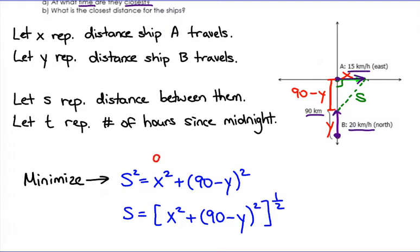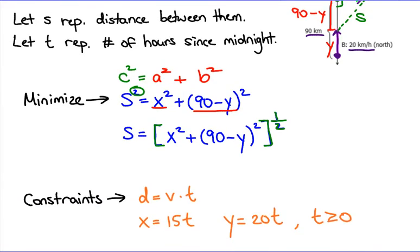We have our A squared and B squared in the Pythagorean theorem: X squared plus (90 minus Y) squared equals S squared. I'm matching colors with what's in my diagram. Then isolating S by square-rooting both sides and writing it as an exponent of one half. Now I have S by itself, but I can't take the derivative yet — there are X's, Y's, and S's, too many letters. That's where the constraints come in.